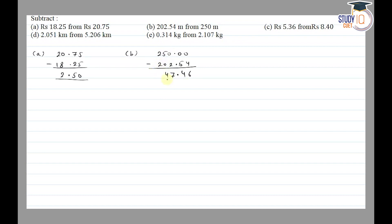So here we get 47.46. Part (c) is 8.40 minus 5.36.